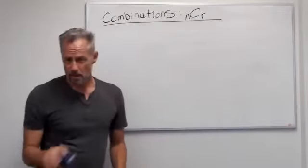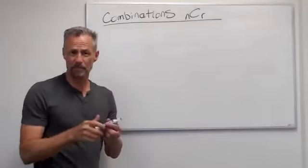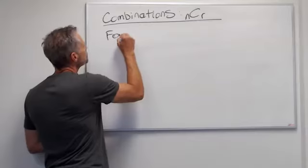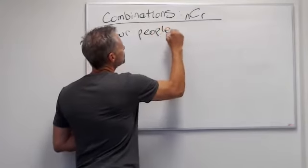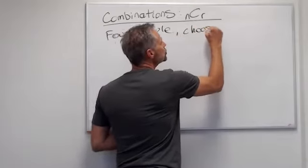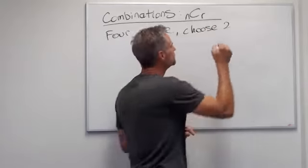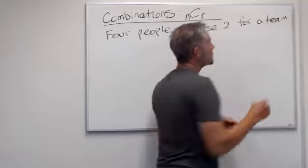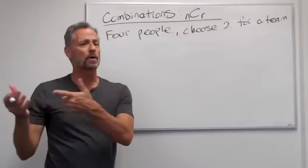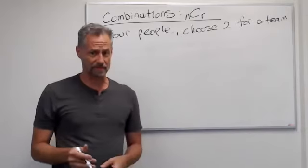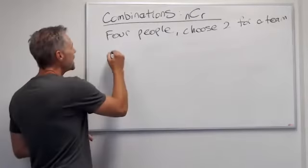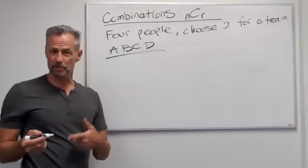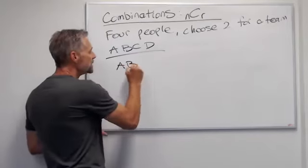Suppose we have four people to pick from. We want to choose two to be on a team. And so the order here doesn't matter because whether you pick one person first or second, they're both on the same team. So if I have A, B, C, and D as my four people to choose from, I can pick A and B.